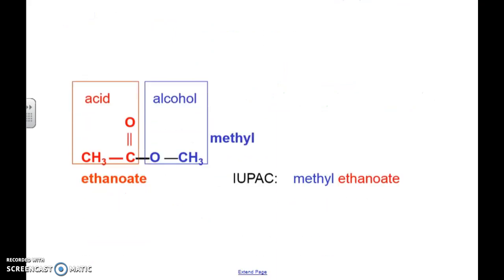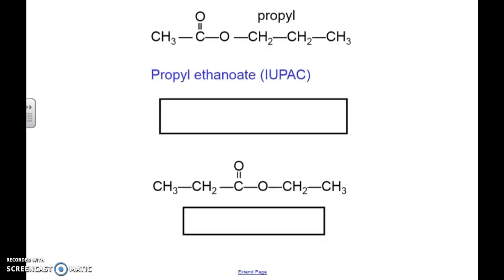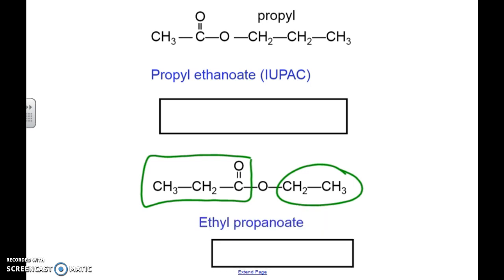Here we have methyl ethanoate. In this example, we've got our propyl side chain - propyl ethanoate. If we look at another example, we've got an ethyl group right here, and the propanoate here. So this becomes ethyl propanoate.